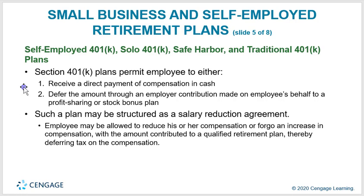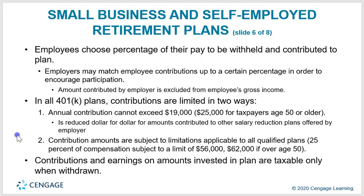A Section 401(k) plan permits employees to either receive direct payment of compensation in cash or defer the amount through an employer contribution to a profit sharing or stock bonus plan. Such a plan may be structured as a salary reduction agreement, allowing employees to reduce compensation with amounts contributed to a qualified retirement plan, thereby deferring tax. Employees choose a percentage of pay to be withheld; employers may match contributions up to a certain percentage. In all 401(k) plans, the annual contribution cannot exceed $19,000 and is reduced dollar for dollar for amounts contributed to other salary reduction plans.